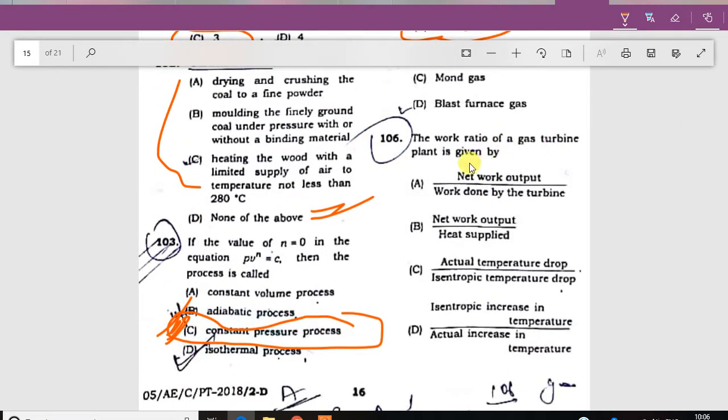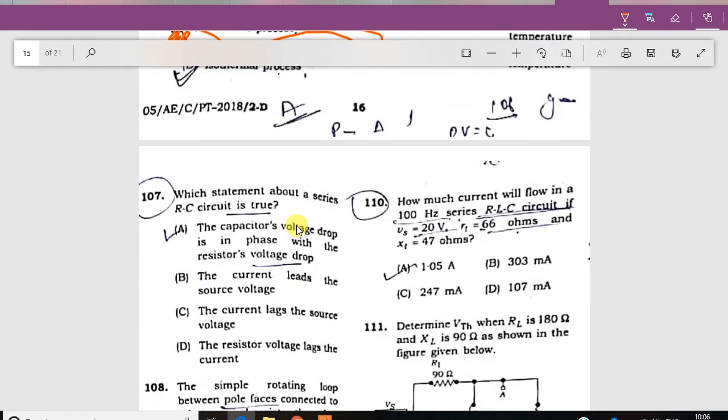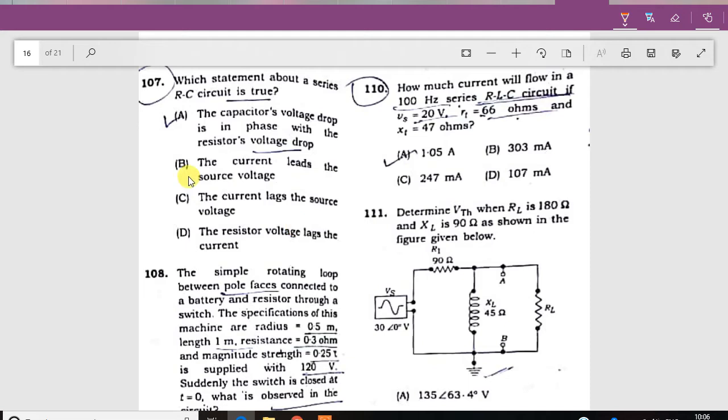The work ratio of a turbine plant is given by net work force output to the work done by turbine. Work done by turbine.